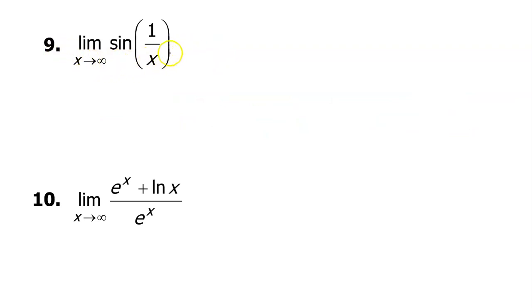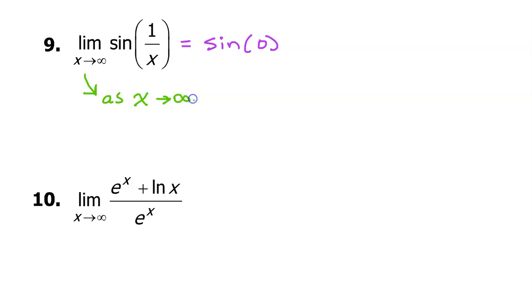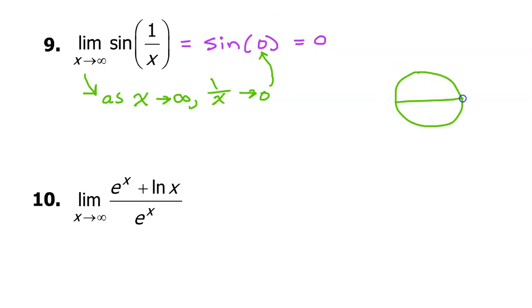There are only two steps to show for problem number nine. You should be able to look at this and immediately know that the limit is equal to the sine of zero. As x approaches infinity, the one over x inside approaches zero because the denominator is getting bigger and bigger. Then we just evaluate the sine of zero, which is zero — we know that because zero is on the unit circle, and sine is the y-value, which is zero. So our limit is zero.